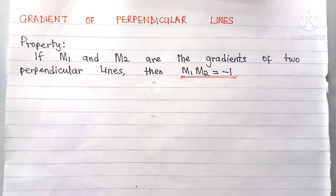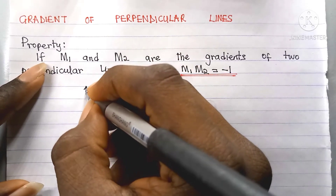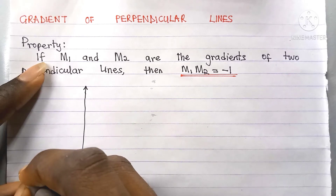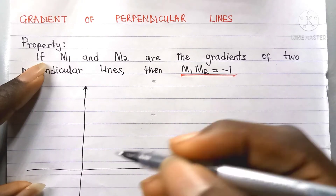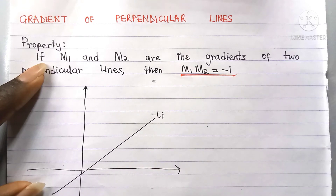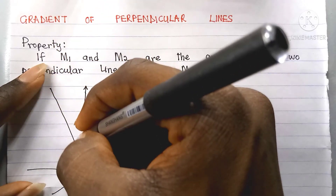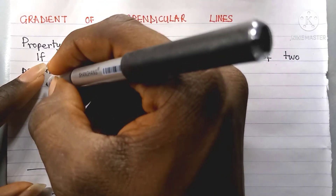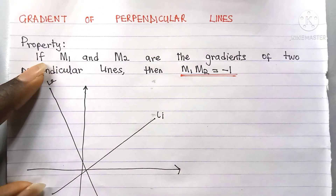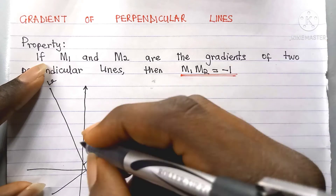To have a better understanding of this property, let's first draw a diagram in the Cartesian coordinate plane. If we have a line, let's call it l1, and another line perpendicular to l1, call it l2 — since they are perpendicular, the angle between them is 90 degrees.